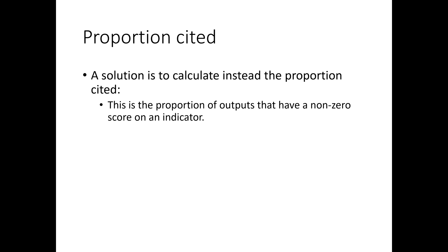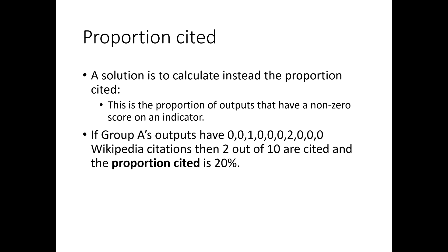So we're going to look instead at the proportion with a non-zero score — the proportion cited. This is the proportion of outputs that have a non-zero score on any indicator. For example, if group A's outputs have scores of zero, zero, one, zero, zero, zero, zero, two, zero, zero, zero for Wikipedia citations, then that would mean two out of ten are cited, and we would focus on the proportion cited being 20%. Instead of working out the average or the log-transformed average of the zeros and ones, we focus on the fact that 20% were cited.